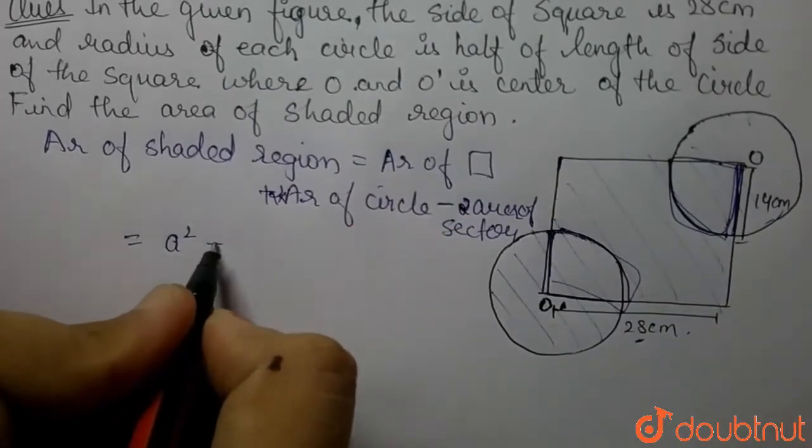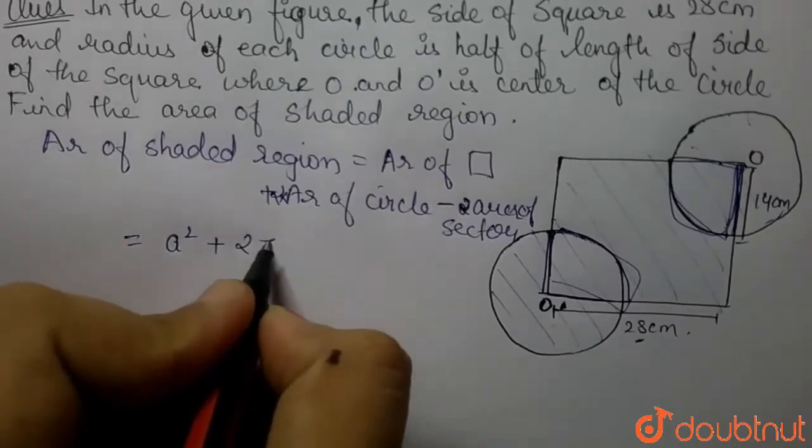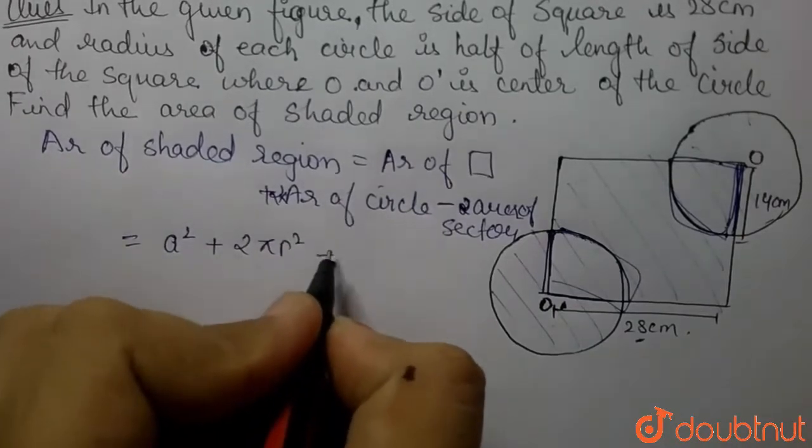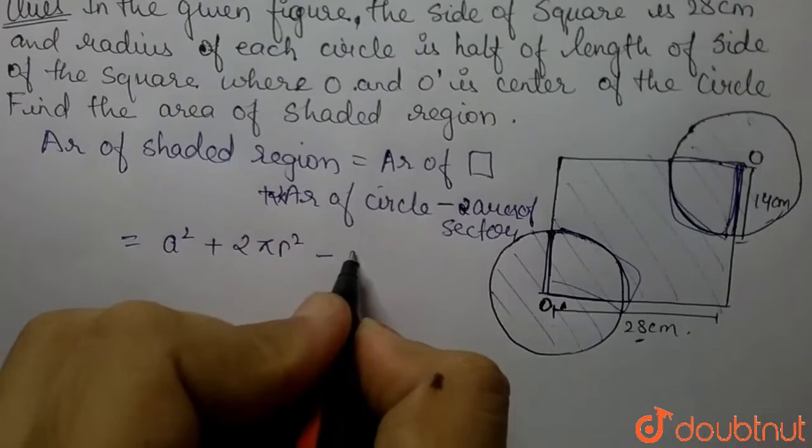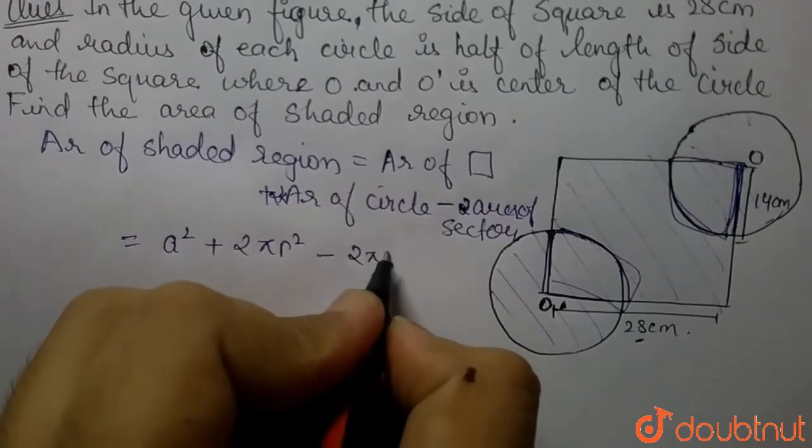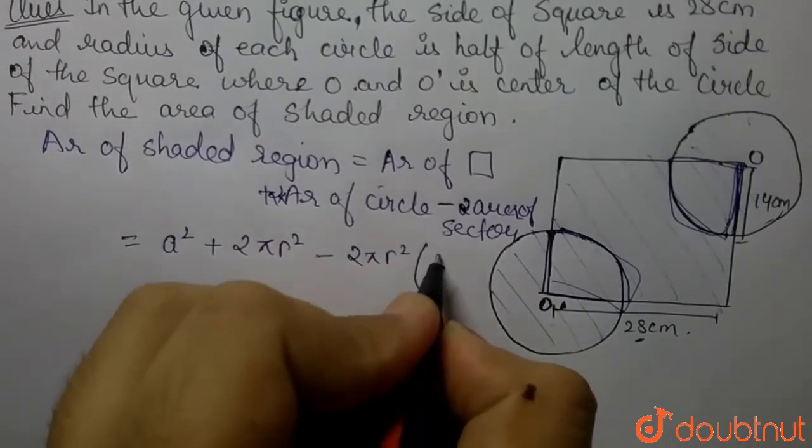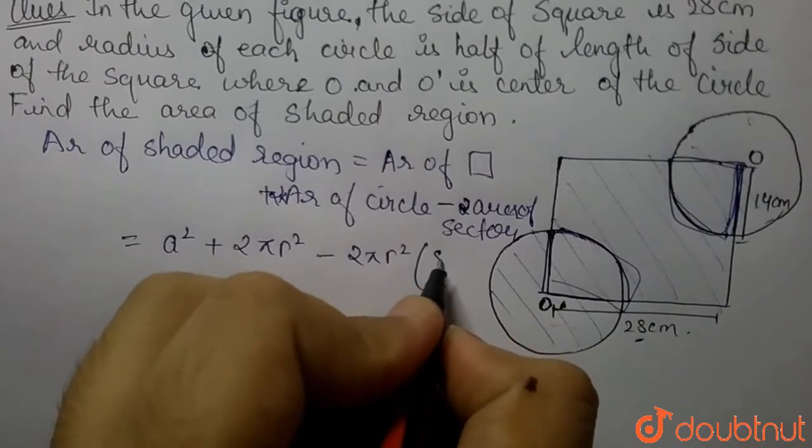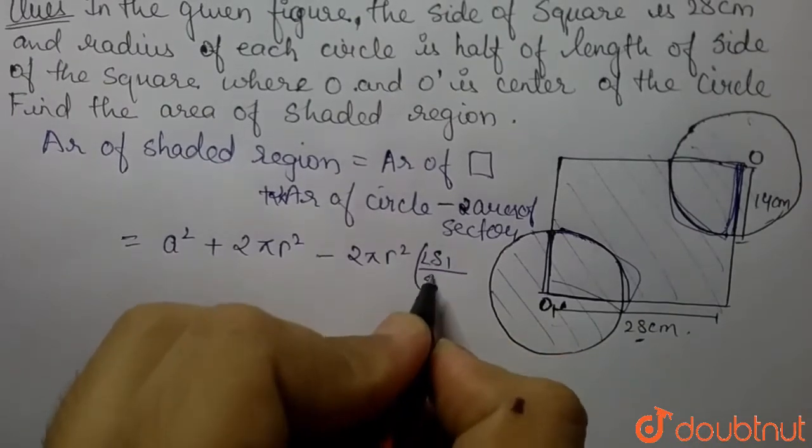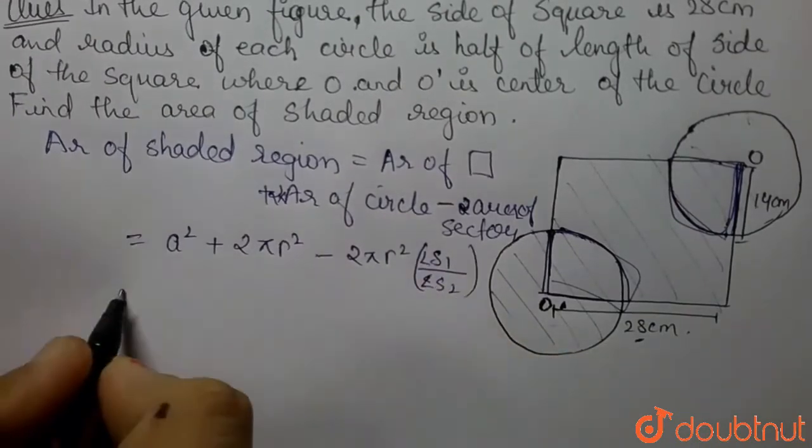We can put the formulas. The area of the square is a squared, which is the side squared, and two times π r squared minus the area of the sector, which is two times π r squared multiplied by the angle of the sector.